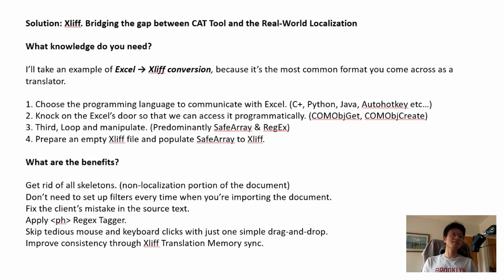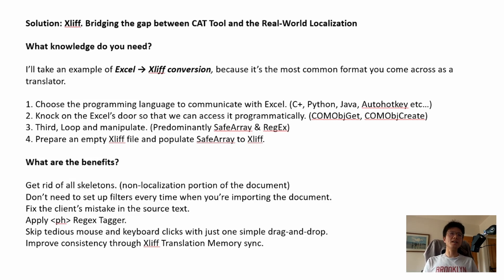Finally, you prepare an empty Excel file and populate it with SafeArray. The benefits: you can get rid of all skeletons — the non-localization portion of the document. You don't need to set up filters every time when importing a document. You can also fix the client's mistakes in the source text, and you can apply a PH RegEx tagger, which is incredibly handy when doing placeholder translations. CAT Tools also have their own RegEx tagging system, but if you hardcode a RegEx tagger into your system, it is much better and more convenient. You can skip tedious mouse and keyboard clicks with just one simple drag and drop, and you can improve consistency of your translation through XLIFF TM Sync.